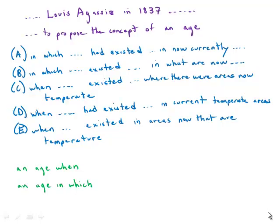This is an interesting sentence about the great scientist Louis Agassiz and his discovery of the idea of an ice age. First, I'll point out we have a split at the beginning between 'in which' and 'when.' This is modifying the word 'age' — a time period — so 'an age when something happened' is correct, and 'an age in which something happened' is also correct. This is a rare case where the sentences begin with an obvious split but all of them are correct.